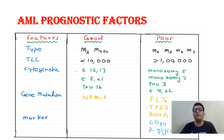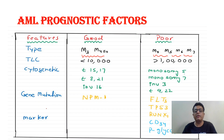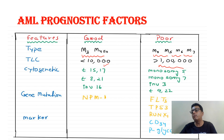In FAB classification: M3 and M4 are good prognostic factors. M0, M5, M6, M7 are poor prognostic factors. TLC: if less than 10,000 it's good prognosis; more than 1 lakh is poor prognosis. Now concentrate on these translocations: 15;17, 8;21, and inversion 16 are good prognostic factors.